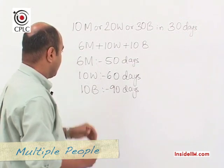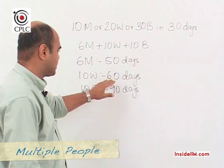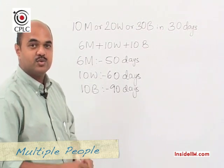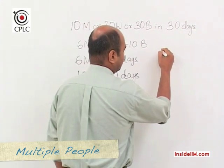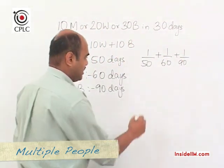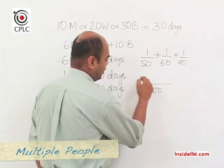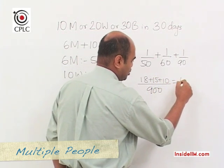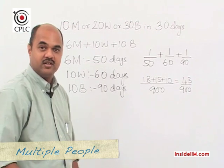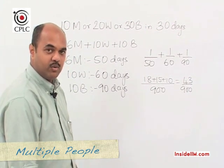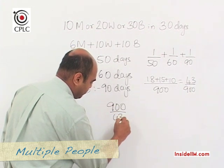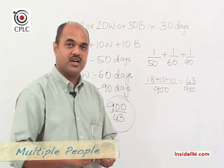So 6 men take 50 days, 10 women take 60 days, and 10 boys take 90 days. Working together, using the reciprocal method, the combined one-day work is 1/50 + 1/60 + 1/90. Taking LCM of 900, this gives 18 + 15 + 10 = 43/900. Hence the number of days for all to complete the job together is 900/43 days.